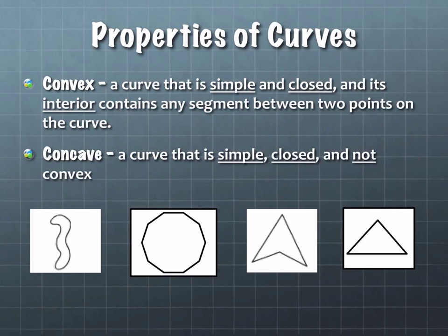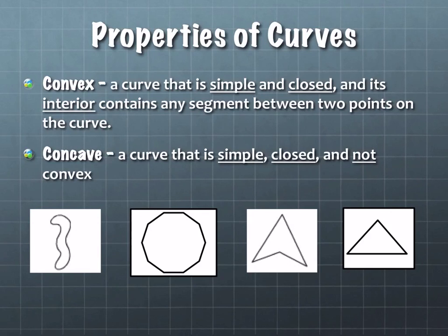Convex is a curve that is simple and closed, and its interior contains any segment between two points on the curve. A concave curve is one that's simple, closed, and not convex. The kicker is this: if you can locate points on the shape, connect them with a line segment, and the connection is always inside, then it's a convex shape. If the segment ever goes outside of the shape itself, then it's concave.